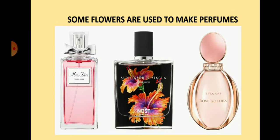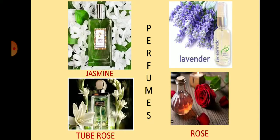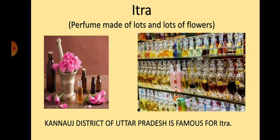Some flowers are used to make perfumes. Flowers with strong smell like jasmine, tuberose, lavender, and rose are used to make perfumes. Do you know what is Yitr? Yitr is also a perfume made of lots and lots of flowers. The Kannauj district of Uttar Pradesh is famous for the production of Yitr.